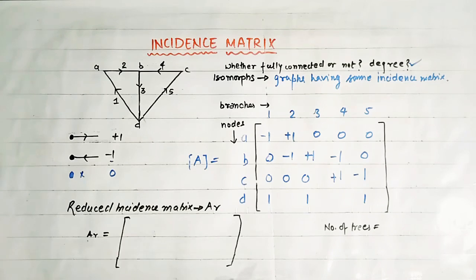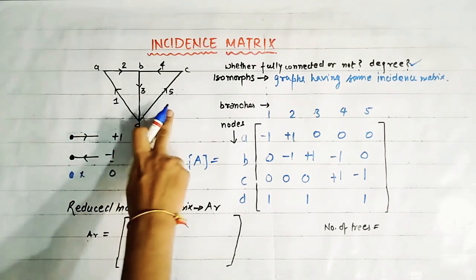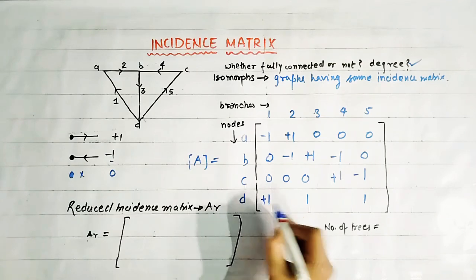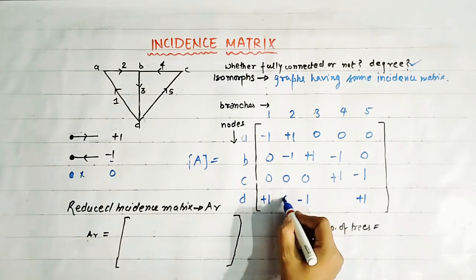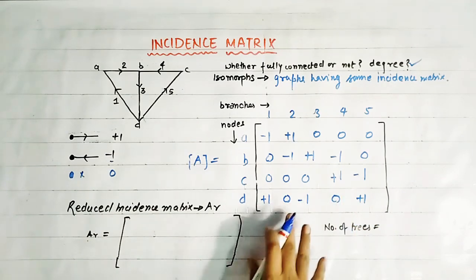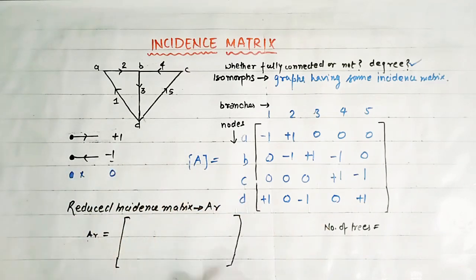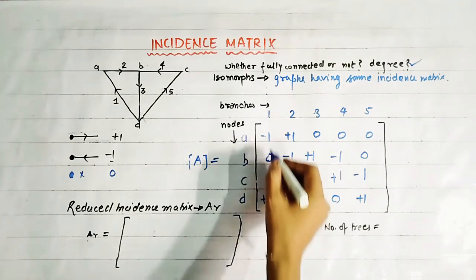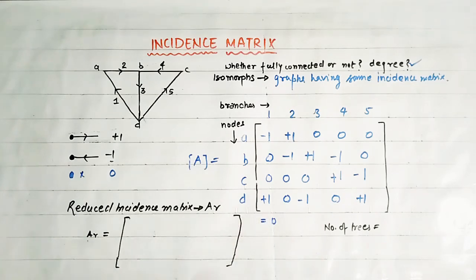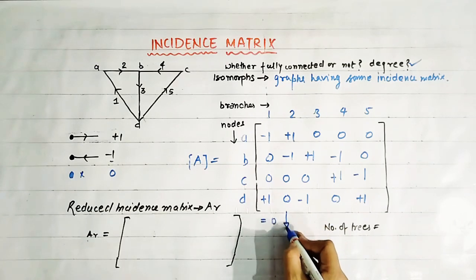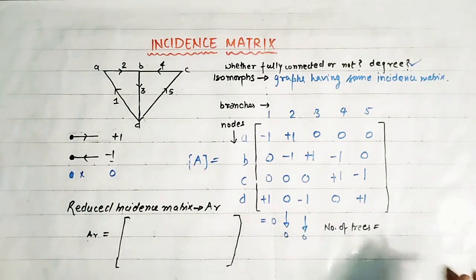In this way we can draw the incidence matrix of this graph. There is one important property: if you sum any column — for example, minus one plus one — it equals zero. The sum of each column is always equal to zero. This is an important property of the incidence matrix of a graph.